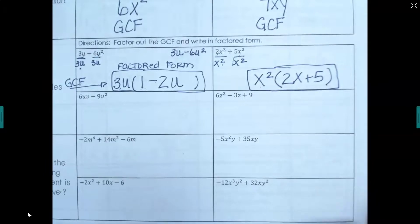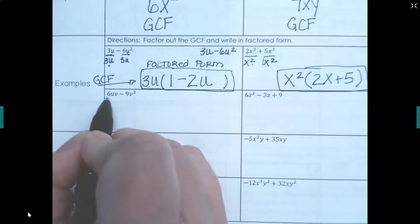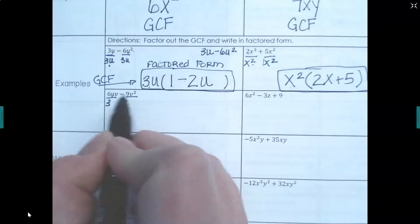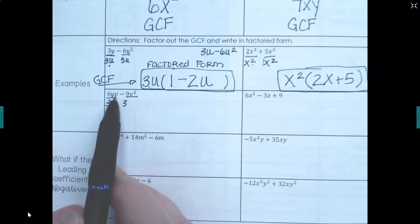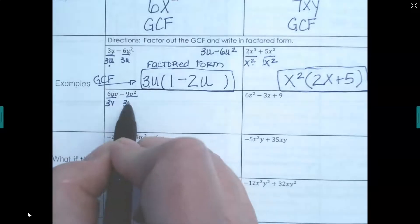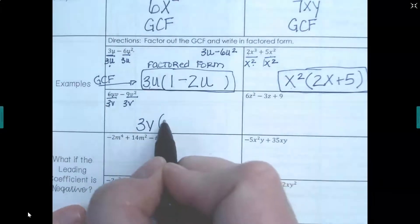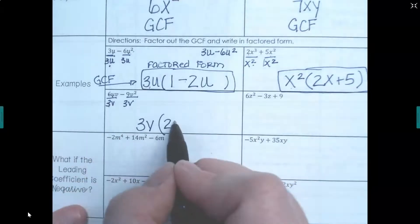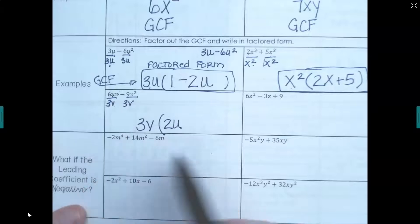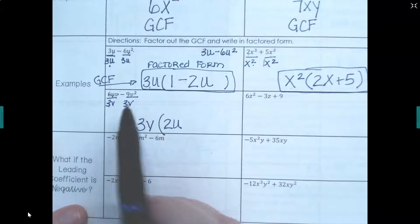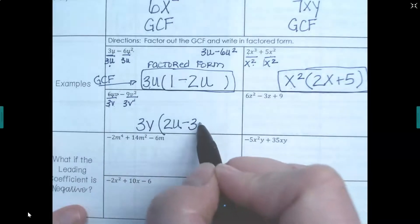Next: 6uv and −9v². The numbers 6 and 9 have a 3 in common. Both terms do not share a u, so u is not common. Both have v — smallest power is v to the first. GCF is 3v. Dividing out: 6 ÷ 3 = 2, u stays u, v ÷ v gives 0 (no v left from first term). Then −9 ÷ 3 = −3, v² ÷ v leaves v (2−1=1). Factored form: 3v(2u − 3v).